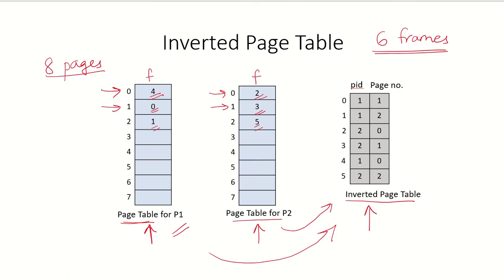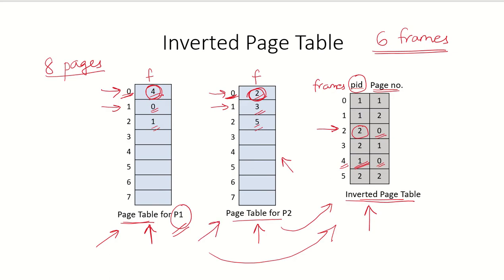Looking at the page table for process 1, you can see that page 0 of process 1 has been put in frame 4. In the inverted page table, frame 4 contains page 0 of process 1, storing the process ID and the virtual page number. Similarly, frame 2 contains page 0 of process 2. So rather than having separate page tables, the inverted page table holds information about all frames in the system.